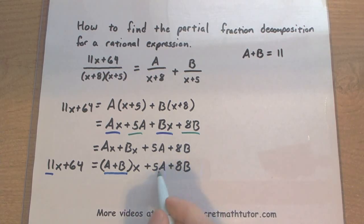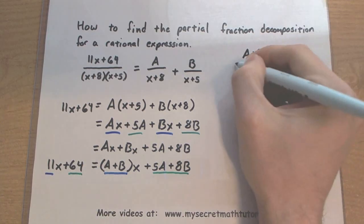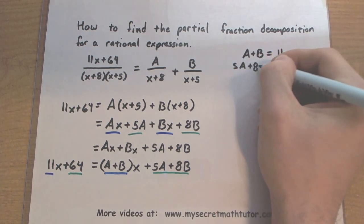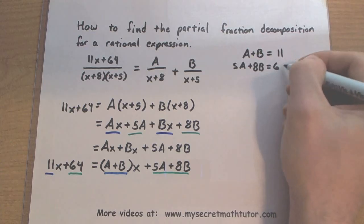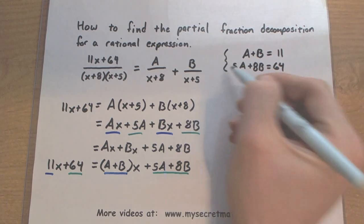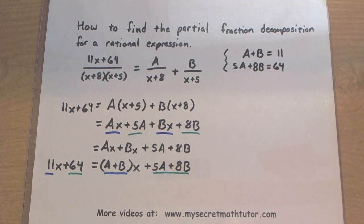Let's look at the parts that do not have any x's. When these are put together, they must equal 64. So if you have 5A plus 8B, it must equal 64. From those conditions, you can see we have a system of equations. We can solve this system, and it should give us our values for A and B.